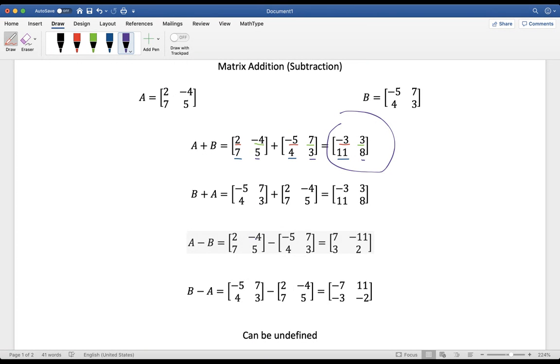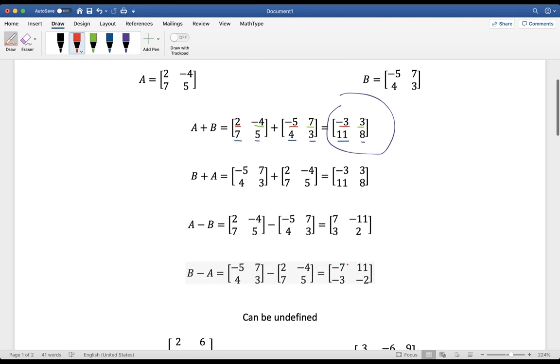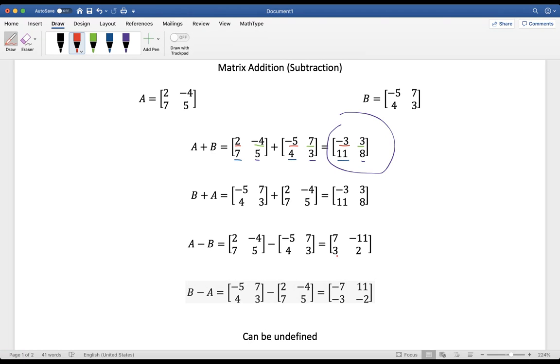Then when we subtract negative four minus seven, we get a negative 11 in the first row, second column. Seven minus four is three in the second row, first column. And then the last row, or the second row, second column, subtracted is going to be two. Five minus three is two.